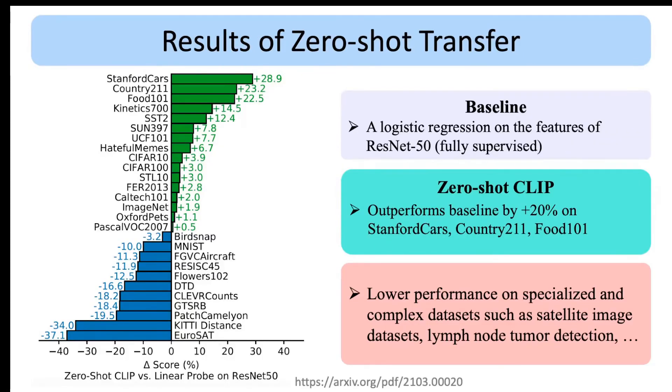Here is the results of the zero-shot transfer applied to several datasets and compared to a fully supervised model serving as the baseline that was built by adding a logistic regression on top of ResNet features. As you can see, the green bars indicate that CLIP is outperforming the supervised baseline model in several datasets, and in some cases like the top three datasets by more than 20%.